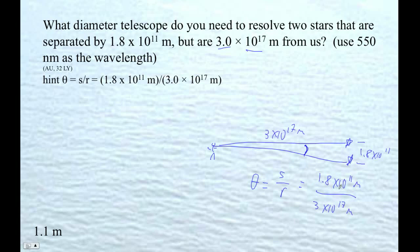So 1.8 E11 divided by 3 E17, and I get 6 times 10 to the minus 7th radians. That is the angle.